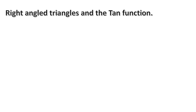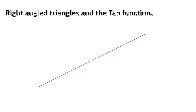Right angle triangles and the tan function. Here is a right angle triangle — a triangle that has one right angle, a right angle being 90 degrees. We have an angle we're going to deal with, and we're going to call that angle theta. You could call it x or anything you like; the normal way is to call it theta. We have the opposite side, which is opposite the angle; the adjacent, which runs along the bottom; and the hypotenuse. This is pretty much all you need to know about right angle triangles.